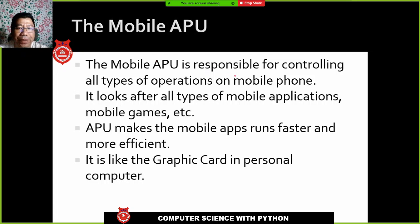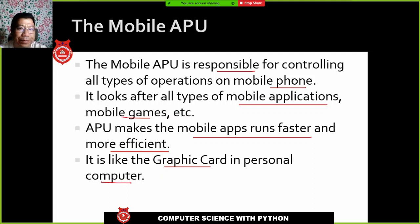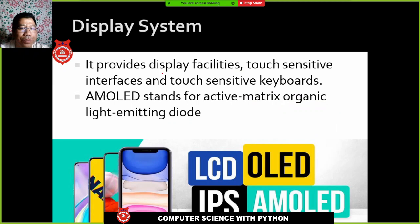The APU is responsible for controlling all types of operations on the mobile phone, looking after all mobile applications, games, etc. The APU makes the mobile phone run faster and more efficiently — it is like the graphics card in a computer. Without the APU, mobile functioning will be hampered or slower, so the CPU alone is not enough.